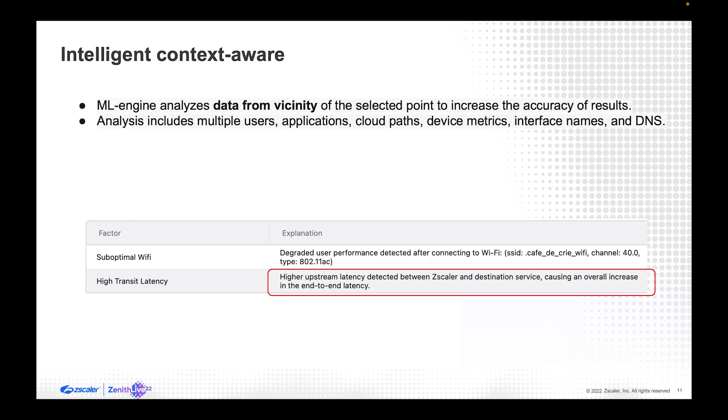So for that, we look at multiple users, not just the one. We look at multiple applications, not just the one that I selected. We look at all the cloud paths, the device metrics, device events, interface names, DNS, etc. And then we output the factors. So in this case, on the second factor, high transit latency, it's basically saying there is higher latency than normal between the CScaler cloud and the application.